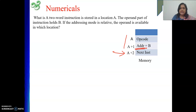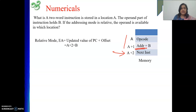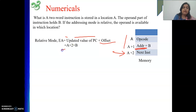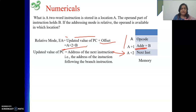So the effective address is the updated value of PC, which is A+2. The offset is the address field value, which is B. In case of relative mode, the effective address is updated value of PC plus offset — that means A+2+B. This is our answer. The updated value of PC means the address of the next instruction, that is the address of the instruction following the branch instruction.